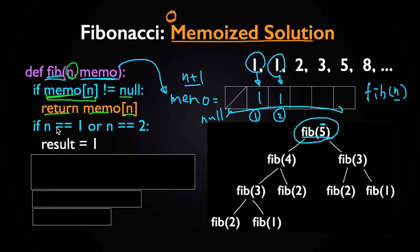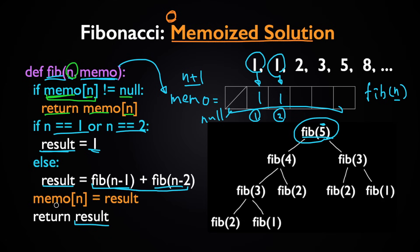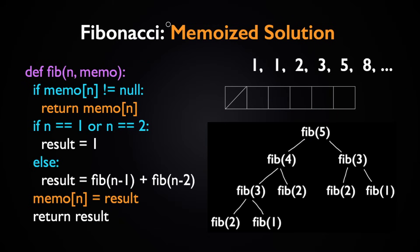Otherwise, the rest is the same as before: if n is equal to 1 or 2, store 1 in result and return it. If that's not the case, find the sum of the two previous Fibonacci numbers and store that in result. What's new is that before returning the result, we store it in memo at index n so we can use it later.